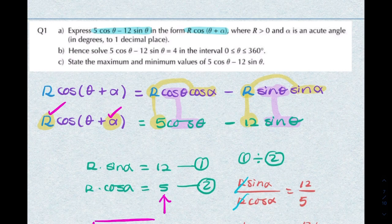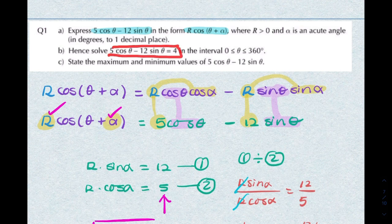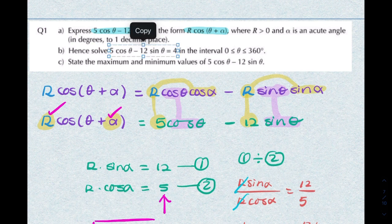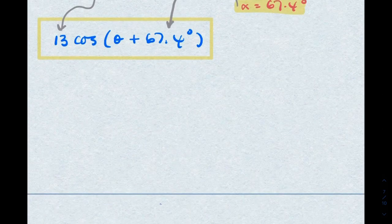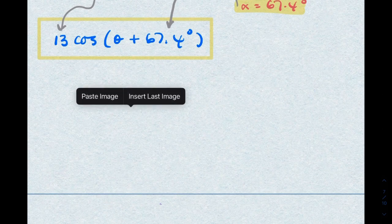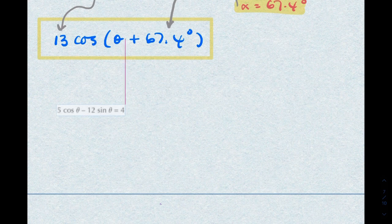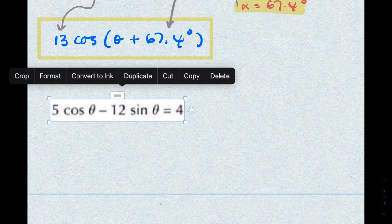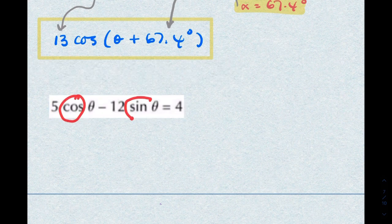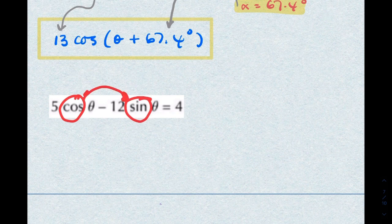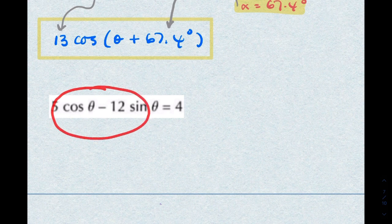The question goes on to say solve this, and it says hence, so that suggests we should use what we just found. That is really helpful because what they want us to solve isn't easy—it's difficult to solve anything where you have sine and cosine together. If we recognize that this is the same as what we just found,